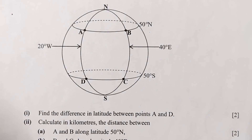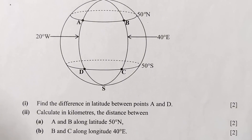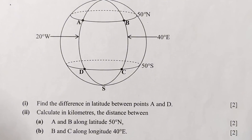For Roman numeral 2, we calculate in kilometers the distance between A and B along latitude 50 degrees north. These two points are falling on a latitude, and we know that a latitude is a small circle. So the difference we're going to use is the difference in longitude. Since A is on longitude 20 degrees west and B is on 40 degrees east, we first get the difference in longitude. We should also note that these two points are falling on a small circle, so we use the formula for calculating distance on a small circle.